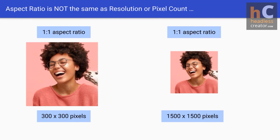Aspect ratio is not the same as resolution or pixel count. The aspect ratio of an image refers to its dimensional ratio, but not the actual resolution or total pixels it contains. For example, a 1:1 aspect ratio asset could be 300×300 pixels or 1500×1500 pixels — it's still a 1:1 aspect ratio. What makes it 1:1 is that the width and the height are equal.